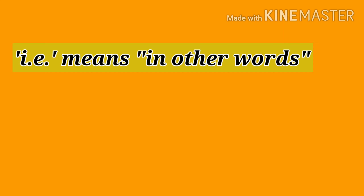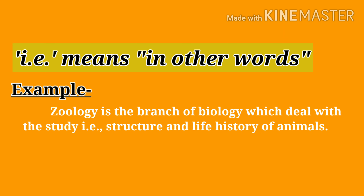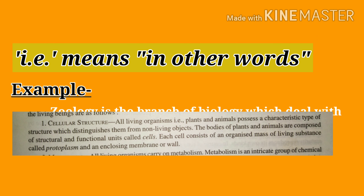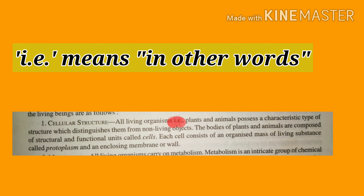So the first abbreviated form is 'i.e.' which means 'in other words.' For example: 'Zoology is the branch of biology which deals with the study — in other words, the structure and life — of animals.' Here, 'i.e.' is used to clarify that 'the study' means structure and life. Take a look at the picture; it is from the book and will also be helpful for you.